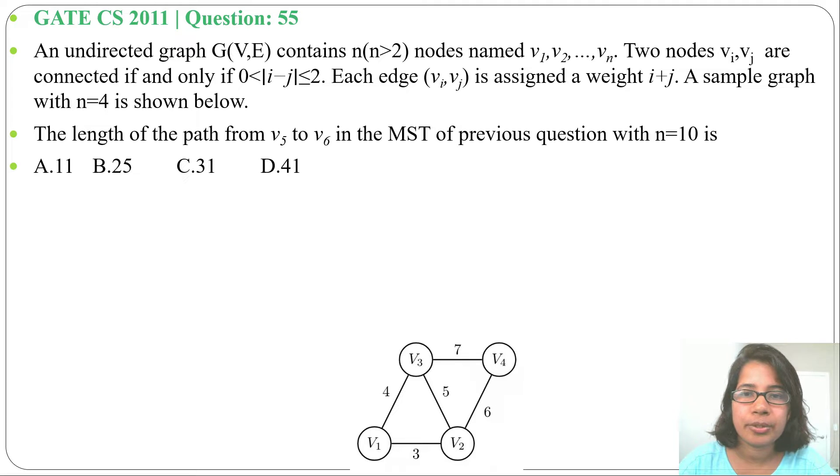Hi, let's solve one previous question of greedy technique. This is a linked question with question number 54, first watch 54 video then come to this question. An undirected graph G(V,E) contains n, n greater than 2, nodes named v1, v2 up to vn.